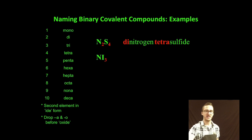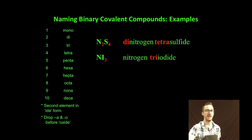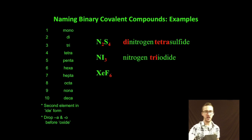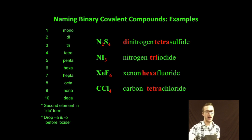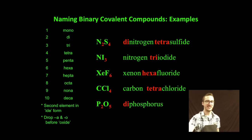So we're starting out with just 'nitrogen.' My second element, which will always have a prefix, is going to be 'tri-iodide.' XeF6: again, my first element gets no prefix because there's a subscript of one, so we've got 'xenon hexafluoride.'